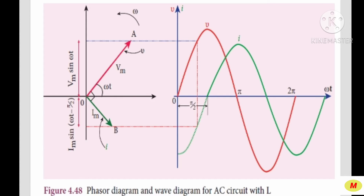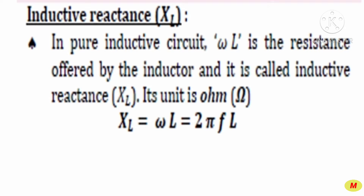This is indicated in the phasor and wave diagram. Next is the definition for inductive reactance XL. In a pure inductive circuit, Lω is the resistance offered by the inductor to the current flow, and it is called the inductive reactance XL. The unit for inductive reactance is Ohm. XL = Lω = 2πfL, where ω represents angular frequency equal to 2πf.